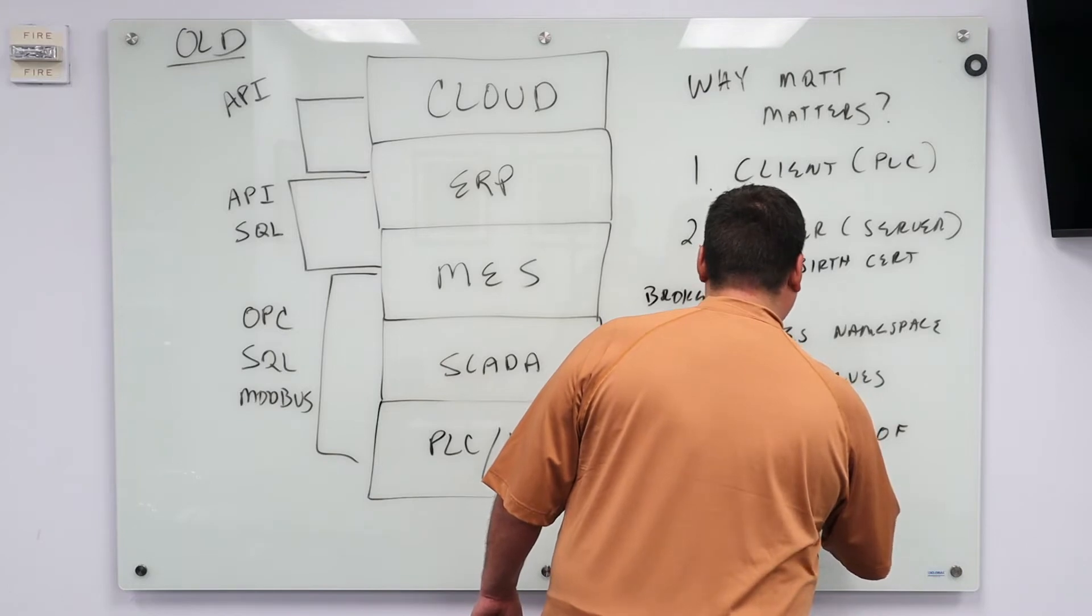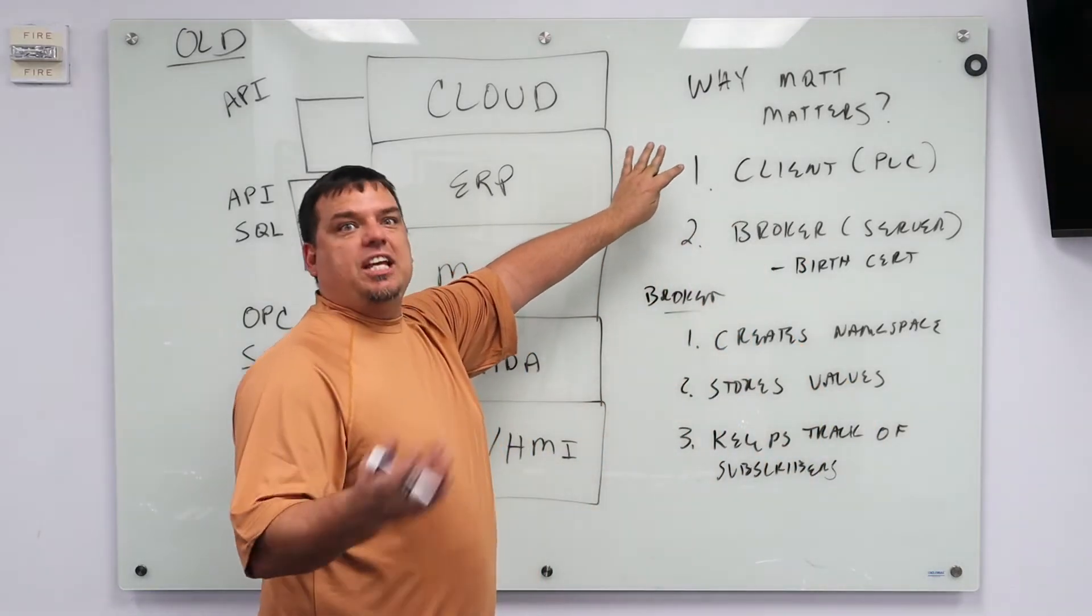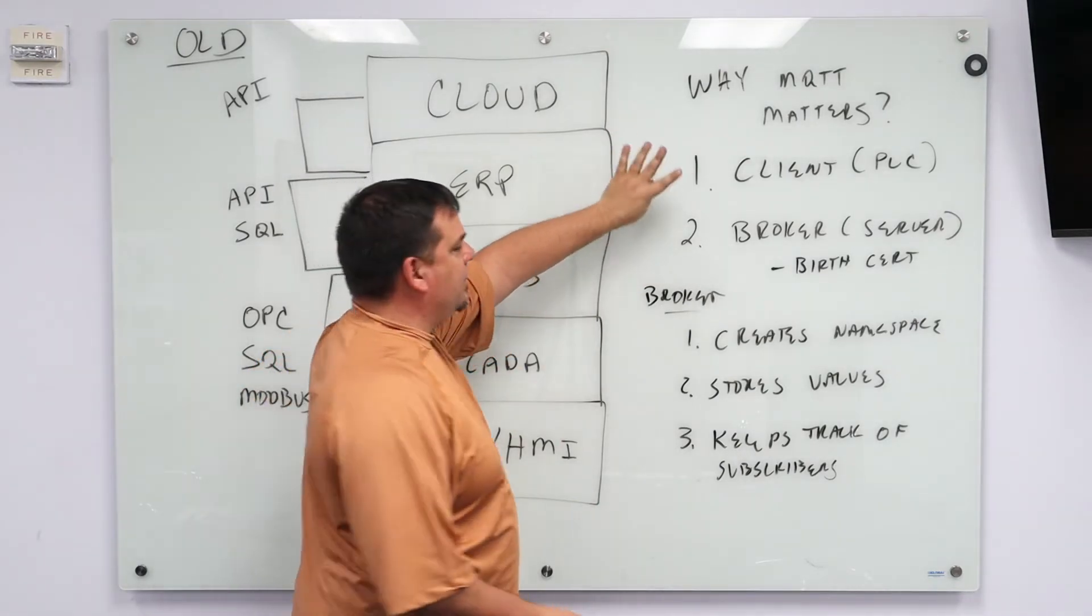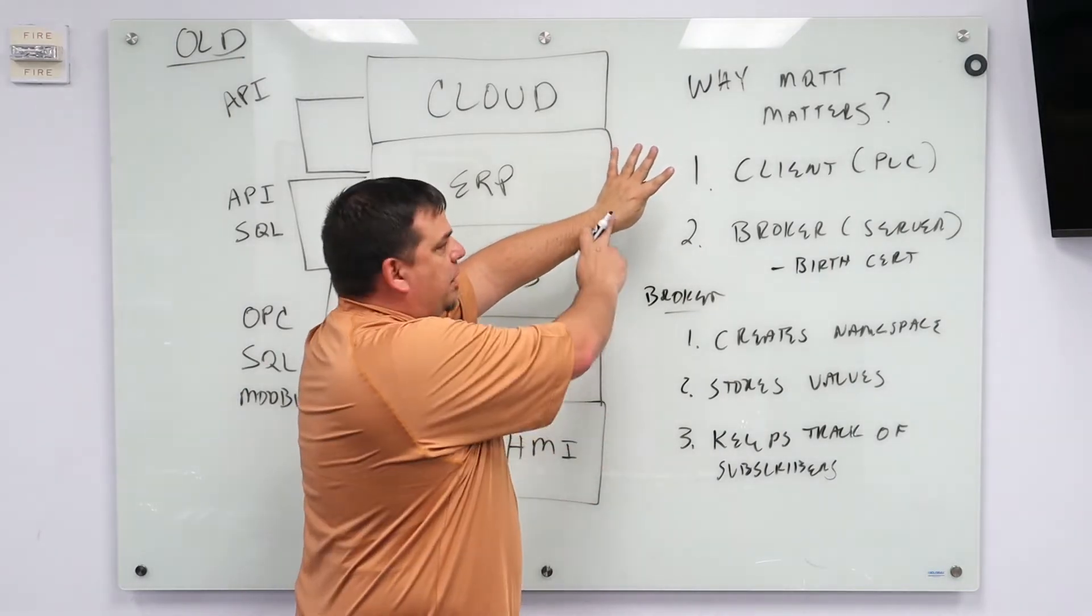So how does that work? I could have a broker here running, say I'm using the Mosquitto or a Hive broker. I could be using Ignition or Chariot. There's lots and lots of brokers out there. And I have a client out here that's publishing data in, a PLC that's publishing data in.